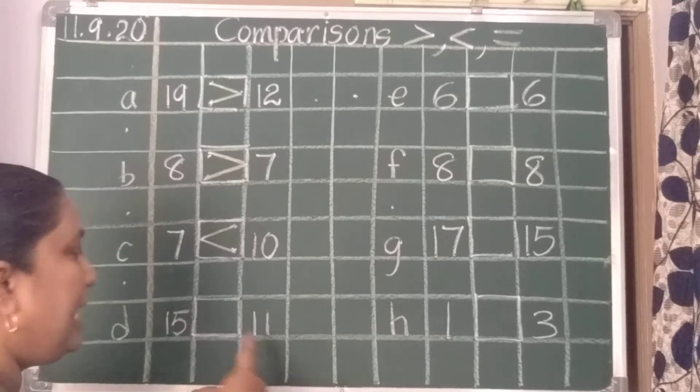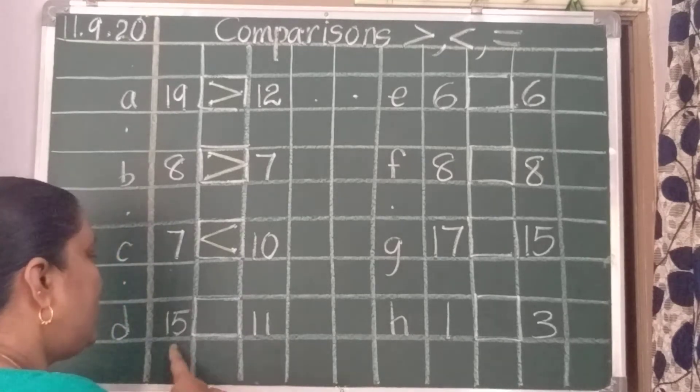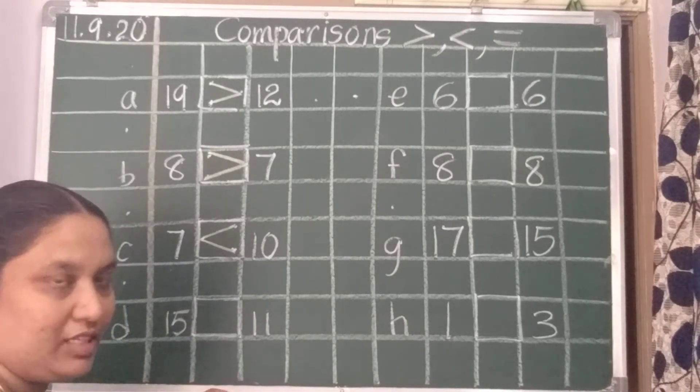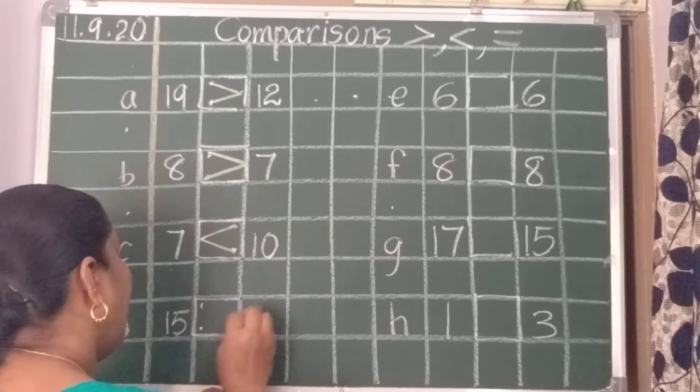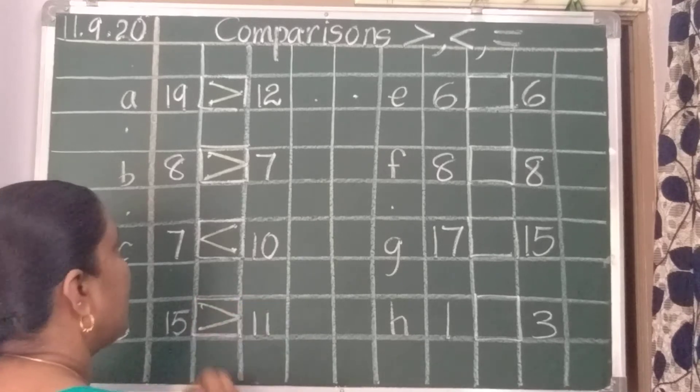Next, 15 and 11. Which is the biggest number? 15 or 11? 15 is the biggest number. So, two dots here and one dot in the middle. Now, join the dots.